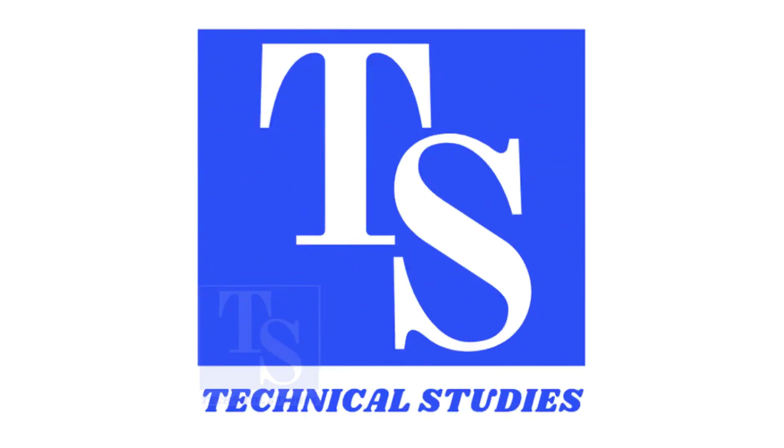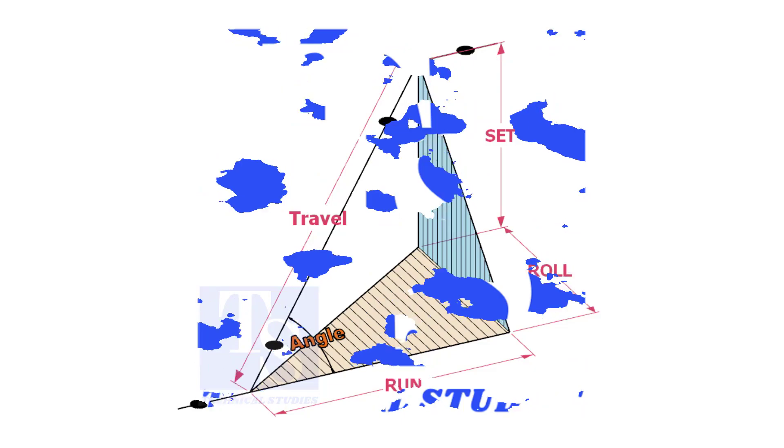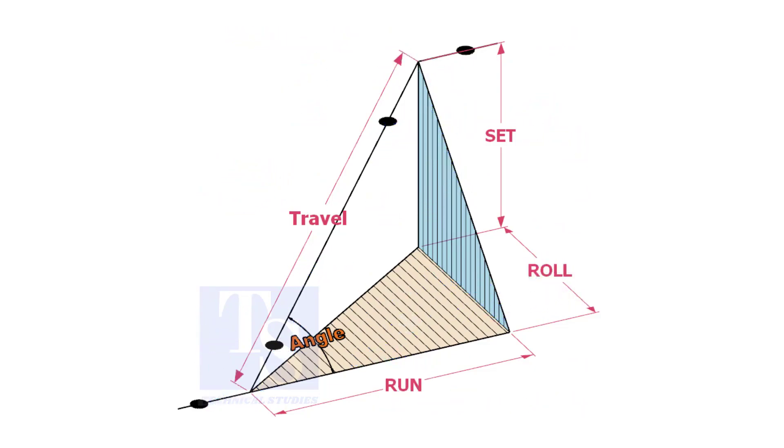Welcome to Technical Studies. In a piping drawing of a double rolled offset, usually the dimensions of the run, set and roll are given.